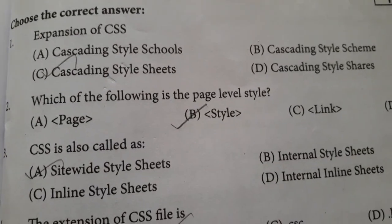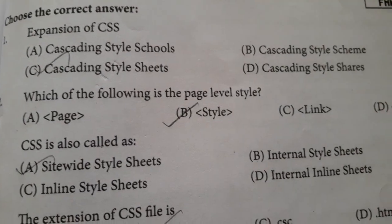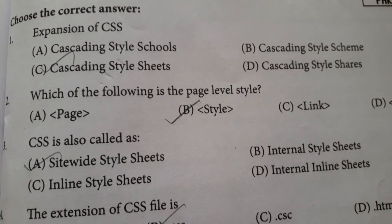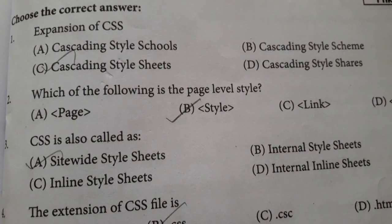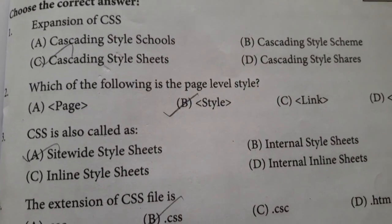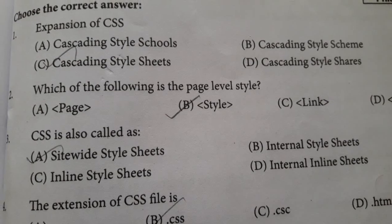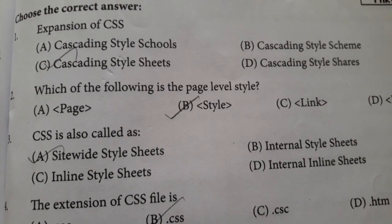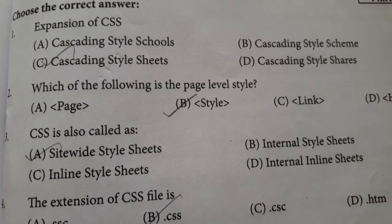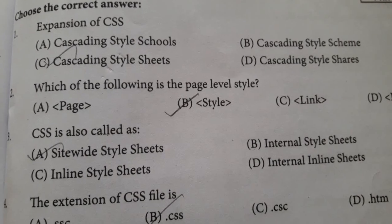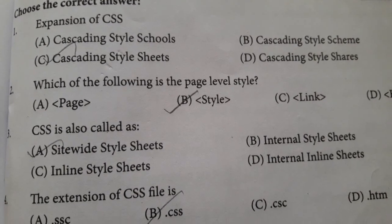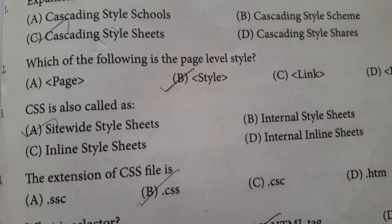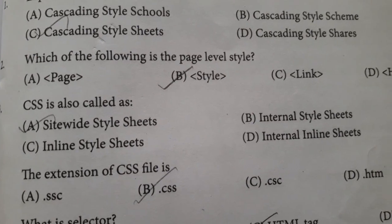Question number one: expansion of CSS. Option A: Cascading Style Schools. Option B: Cascading Style Scheme. Option C: Cascading Style Sheets. Option D: Cascading Style Shares. Answer is option C: Cascading Style Sheets.